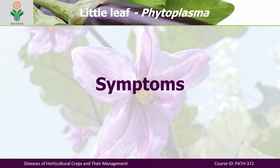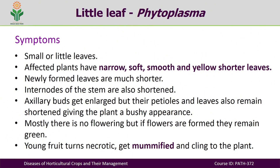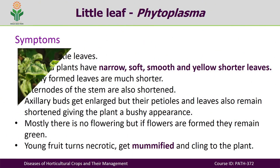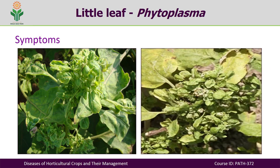The little leaf of brinjal is caused by Phytoplasma. How do we diagnose it? The name itself implies that the leaves become small or little in size. The affected plants have narrow, soft, smooth, yellow, and shorter leaves — that is why the disease is called little leaf of brinjal.